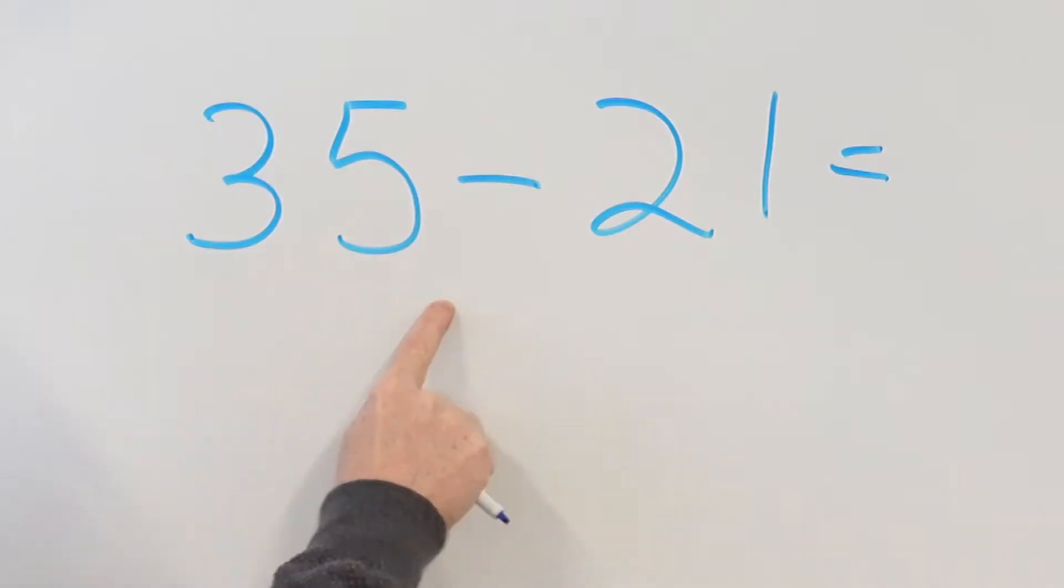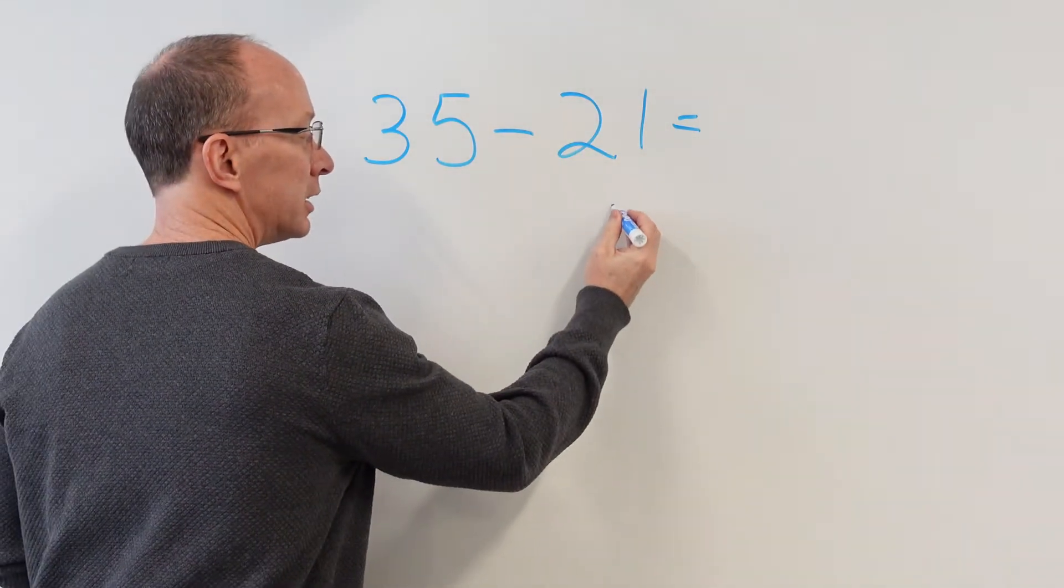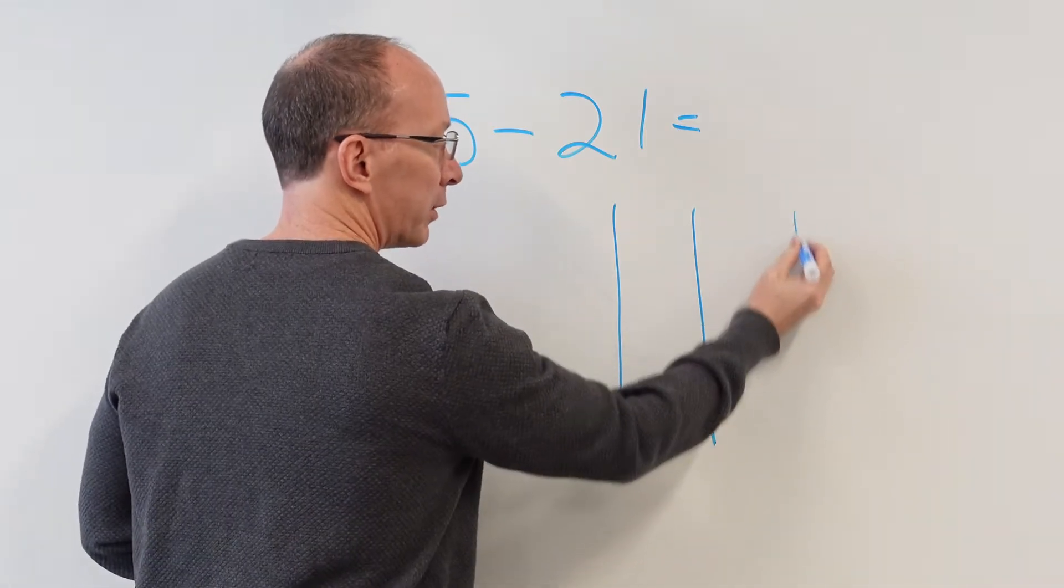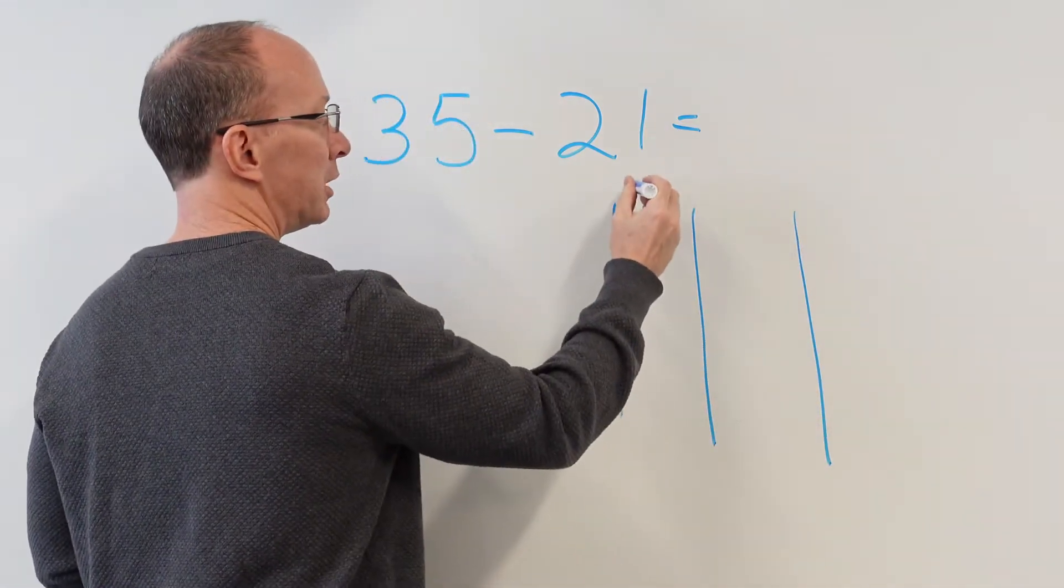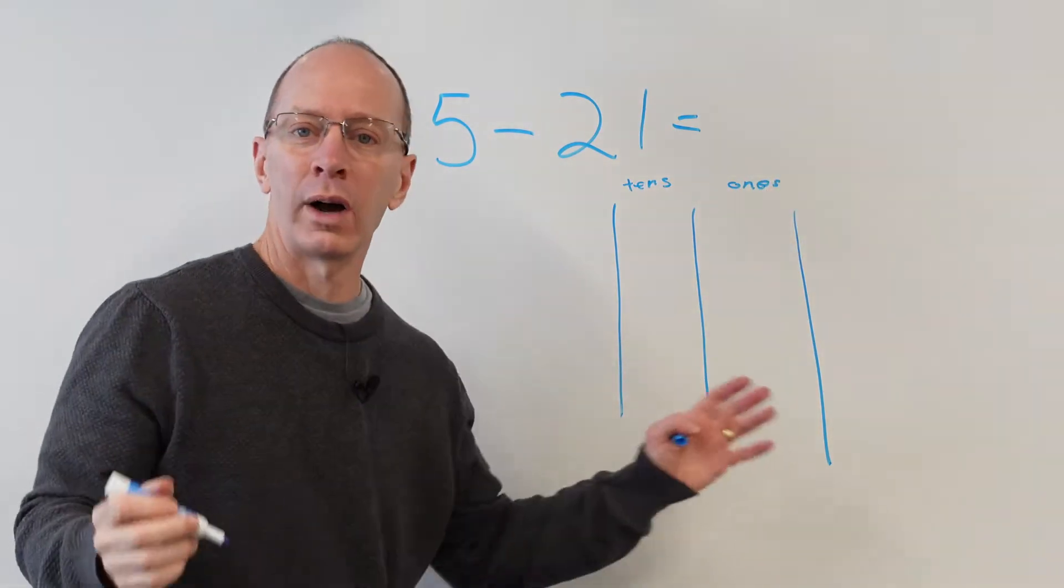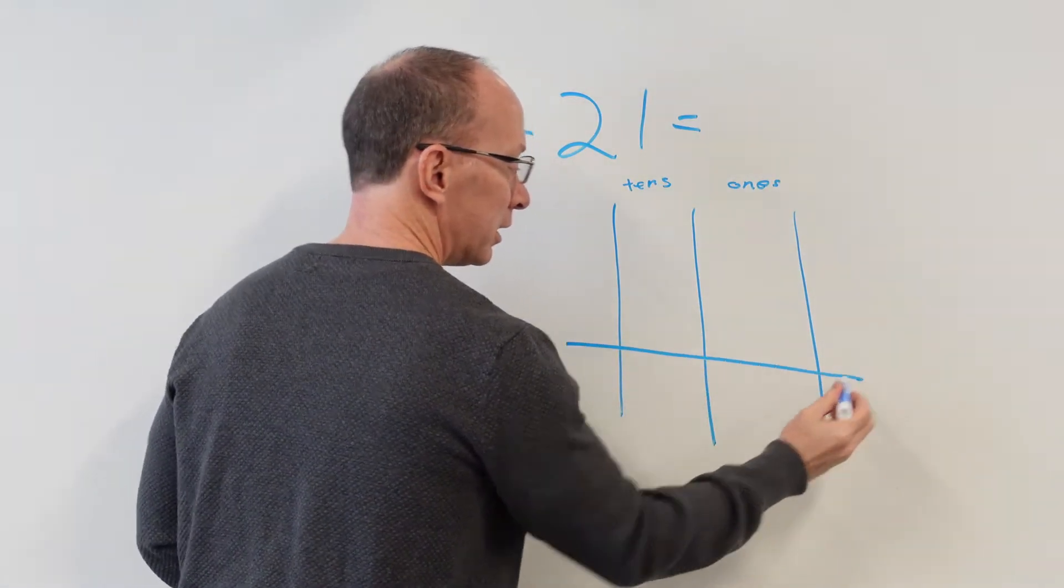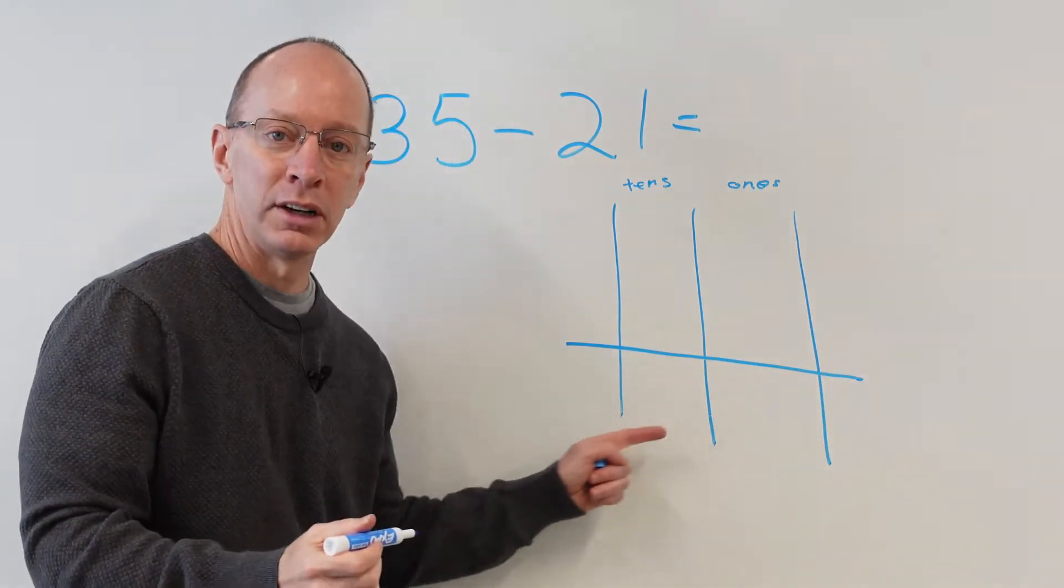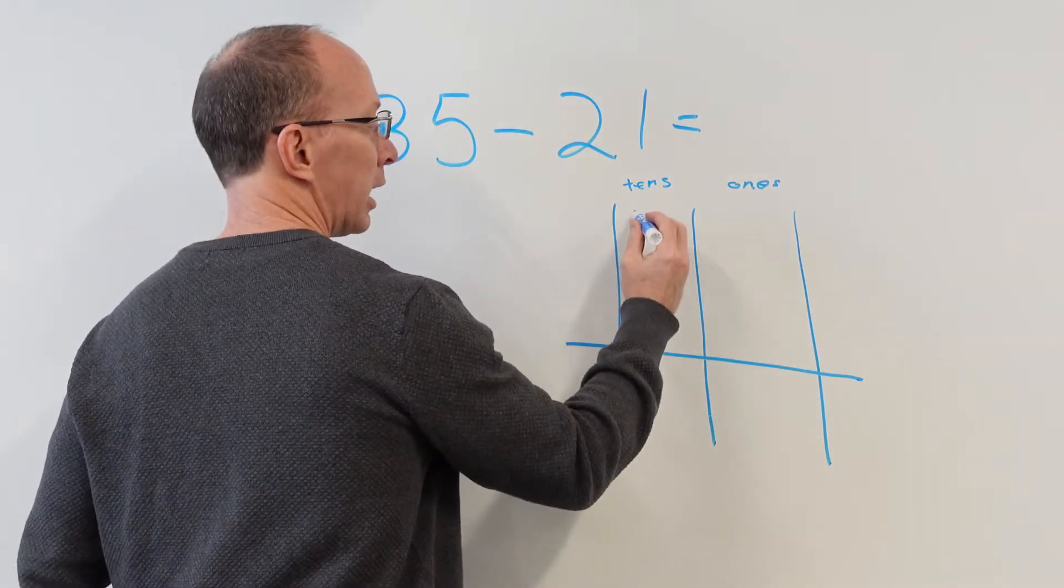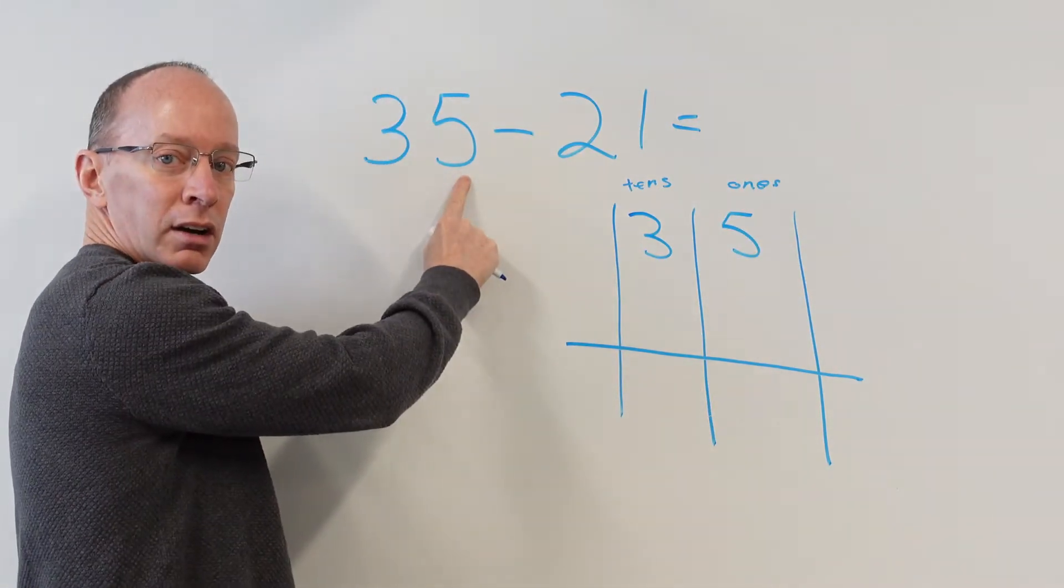Basically, I have a two-digit number, and to start out with, what you can do is you can take a line like this, make three lines, and this is going to be your tens, and this will be your ones. And after a while, you won't have to use this at all. And then I'm going to put a line down here, and this right here will be your sum. This will be your answer.